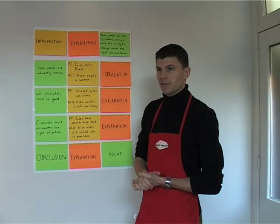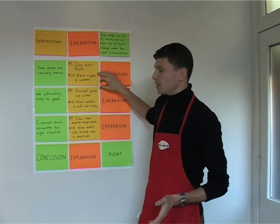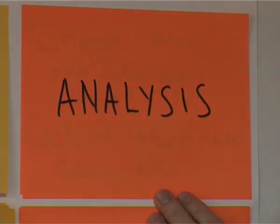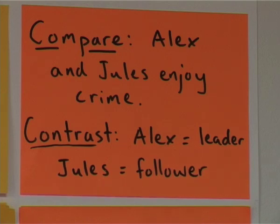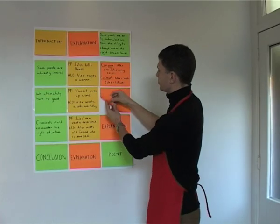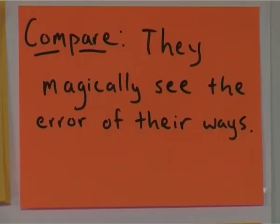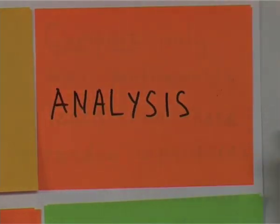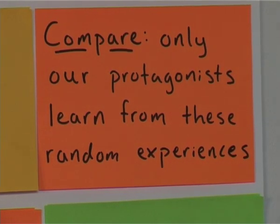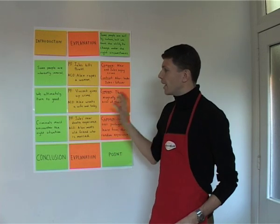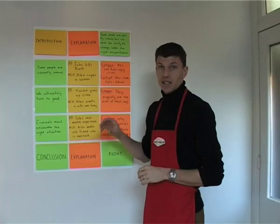For the last step, we're going to cook all of this up and brew it into an essay. We'll do that here by comparing, contrasting, and analyzing. Alex and Jules enjoy crime — that supports this topic sentence. In the second paragraph we support the idea that they ultimately turn to good, comparing it to their magical experiences where they see the errors of their ways. In the third paragraph we look at those situations more closely — only our protagonists learn from these random experiences. Here we have established good arguments that back up our topic sentences, which in turn support the thesis statement. For the finishing touches, it's time to write the introduction and the conclusion.